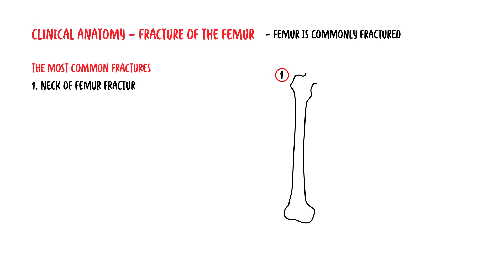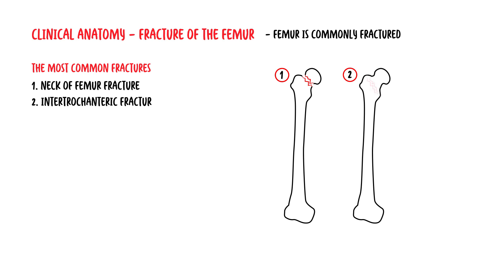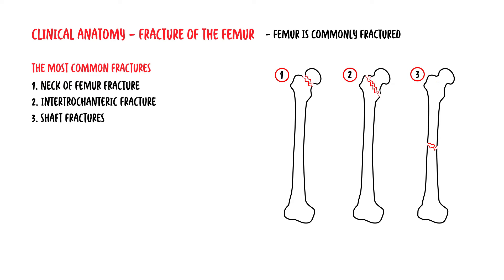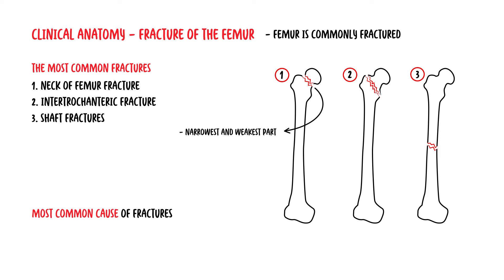Fractures of the femur: Despite its large size and strength, the femur is commonly fractured. The most common fractures include the neck of the femur, intratrochanteric fractures, and shaft fractures. The neck of the femur is the most common site because it is the narrowest and weakest part of the bone. The most common cause is trauma, and a major risk factor is osteoporosis, which weakens the bones and makes them more prone to fractures.